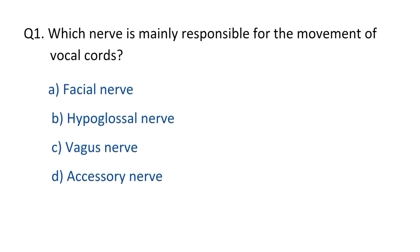Question No. 1. Which nerve is mainly responsible for the movement of vocal cords? The right option is option C, vagus nerve.